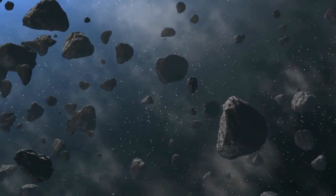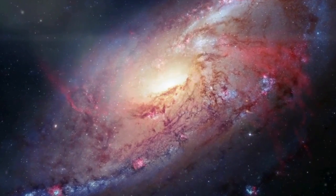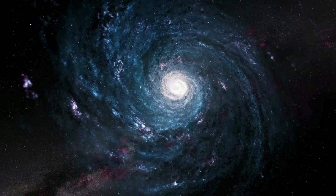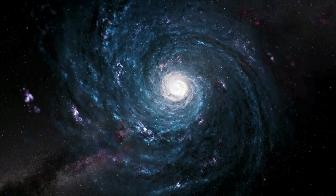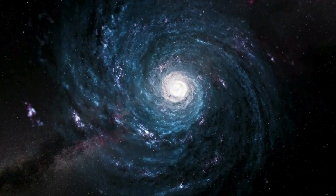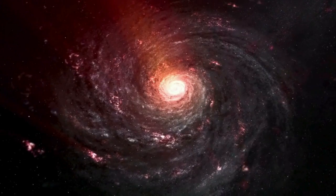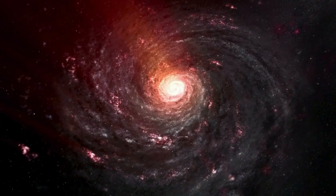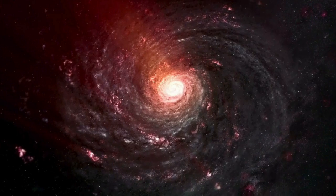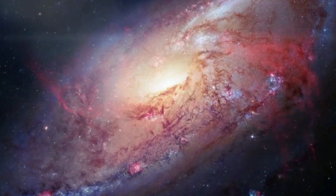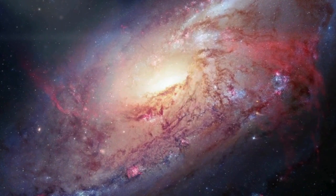A galaxy is larger than a solar system and it is a gravitationally bound collection of stars along with their planets, gas, dust, and dark matter. There are at least three main types of galaxies: elliptical, spiral, and irregular. Galaxies are huge and range in size from dwarfs with just a few hundred million stars to giants with 100 trillion stars, each orbiting its galaxy's center of mass.